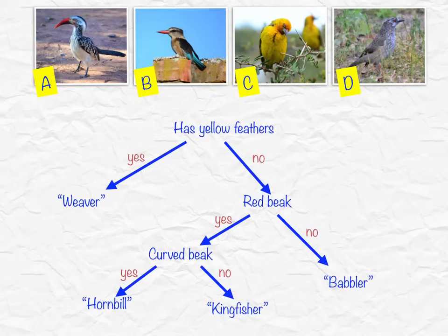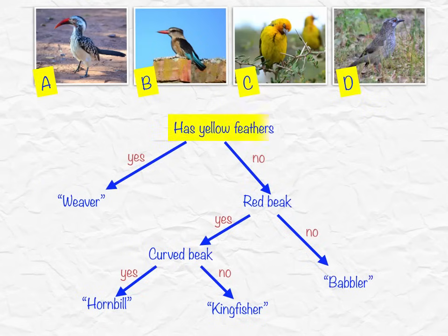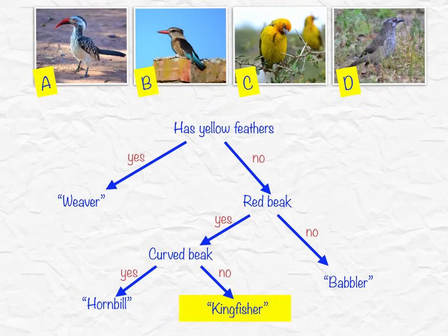Let's use organism B as an example of how to use this type of key. At the top: does it have yellow feathers? Organism B does not, so we follow the no arrow. Does it have a red beak? Yes — we follow the yes arrow. Is that beak curved? No, it's actually straight, so we follow the no arrow and arrive at kingfisher. We've identified it the same way as before — it's just a slightly different method of using the same tool.